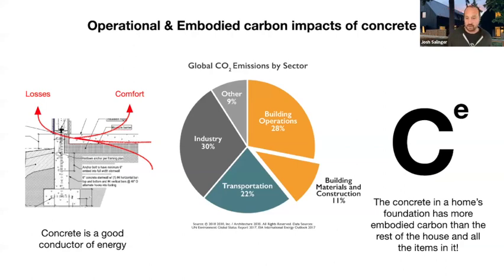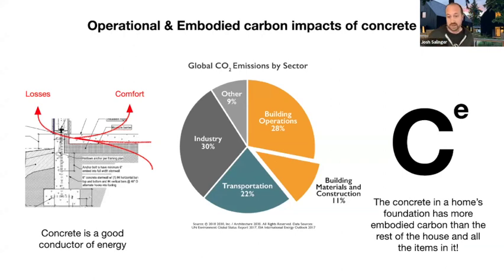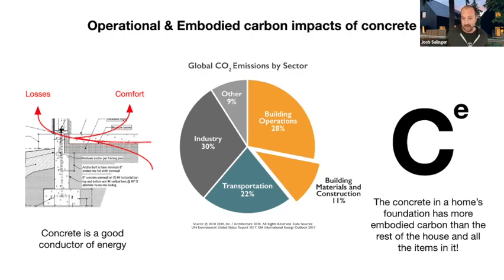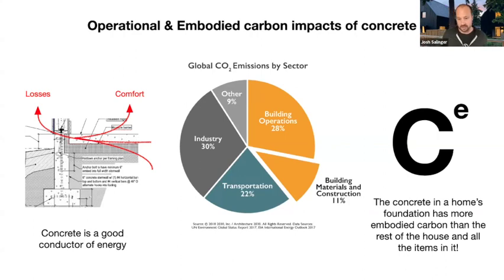Buildings account for about 39% of all greenhouse gas emissions on the planet, with materials and construction accounting for 11% of that. Concrete is a good conductor of energy, so when we look at slabs, most energy losses from inside the building happen through that slab edge. We're losing energy through the slab and also getting comfort impacts — if it's cold or hot outside, that's reflected into the building and affects occupants. Typically, the concrete in a home's foundation has more embodied carbon than the rest of the house and everything inside it.